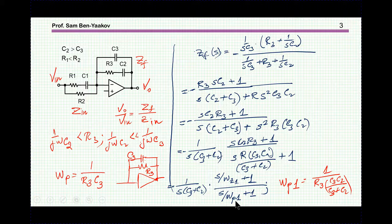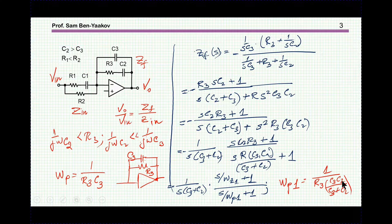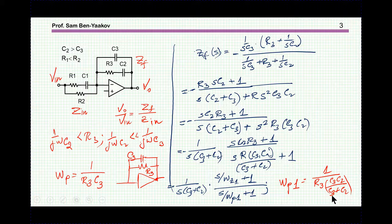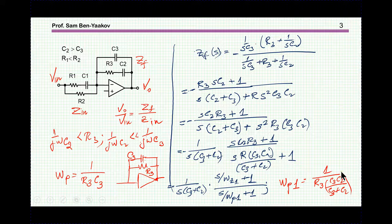This is the pole I'm interested in, and lo and behold, this pole is 1 over R3 C2 C3 over C2 plus C3, meaning that these two are in series, that is, this expression here is for these two capacitors in series. This looks very strange, because you'd like to assume that this will be in parallel. Why would they be in series here?